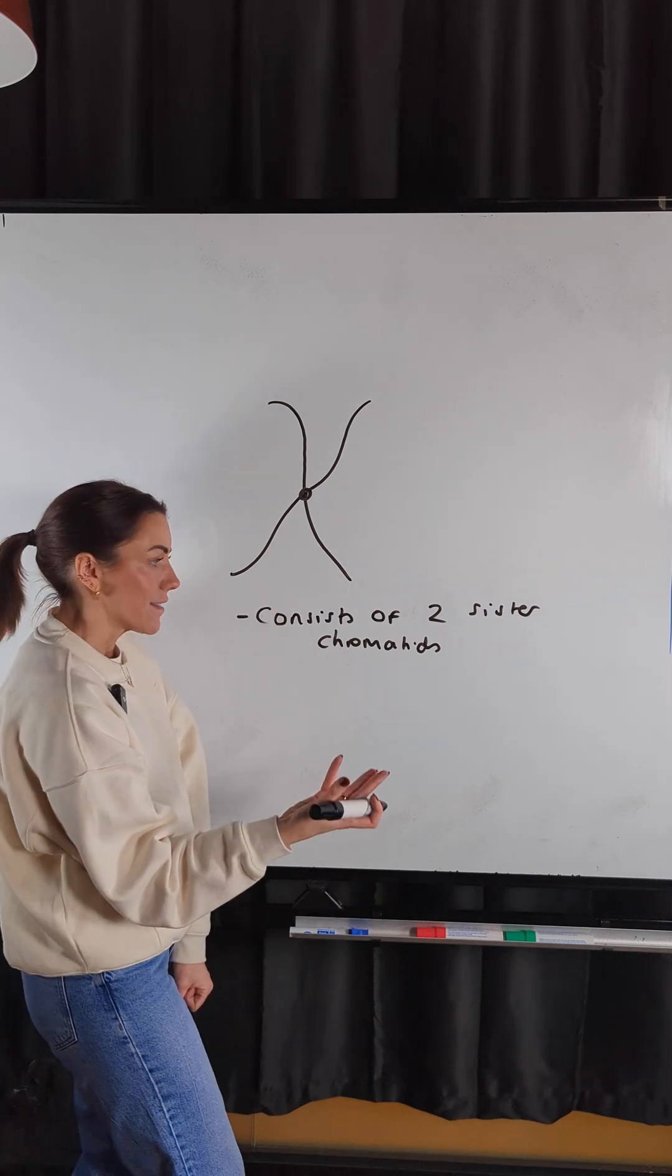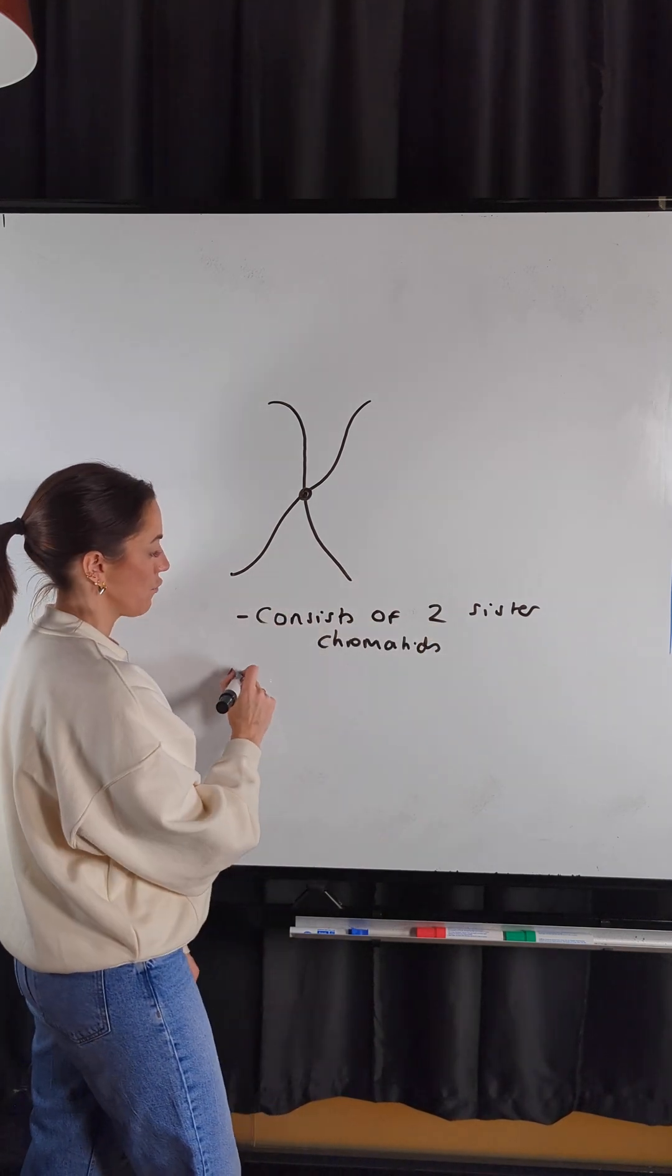So it looks like an X, this chromosome, because it consists of two sister chromatids.